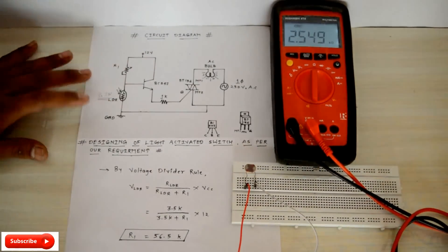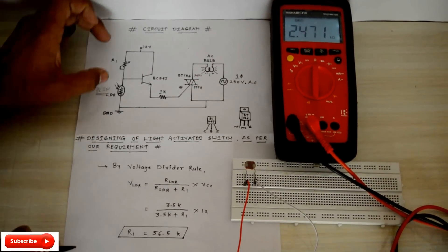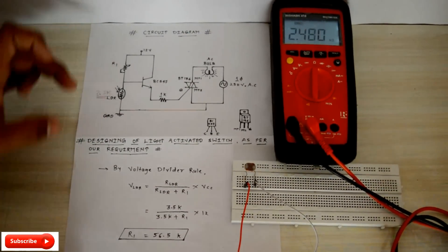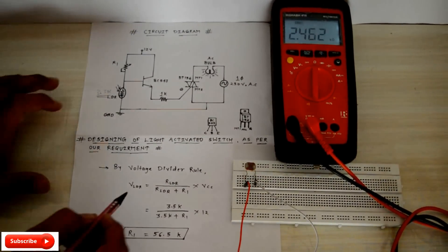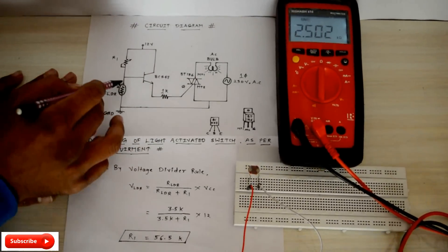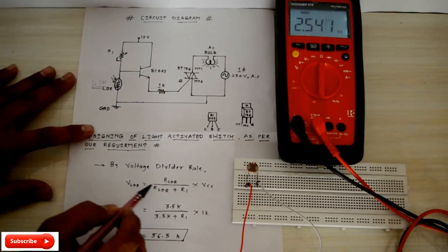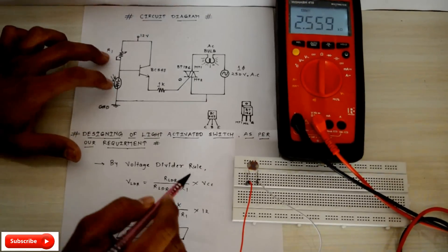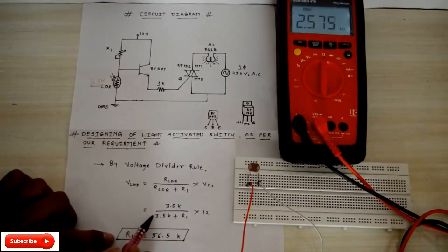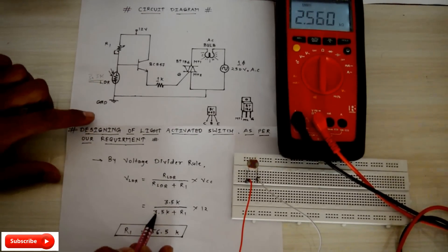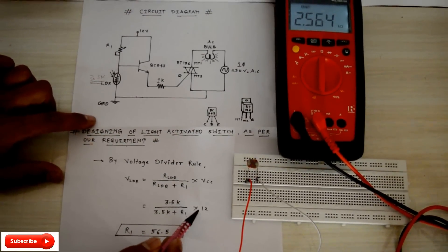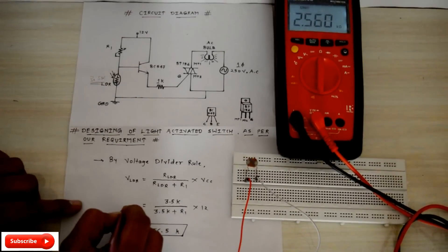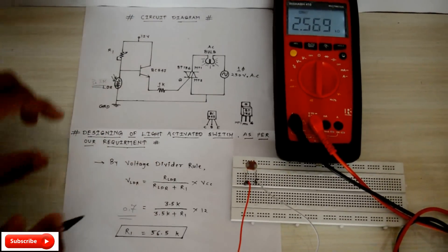The voltage drop across this LDR is equal to R_LDR divided by total resistance into VCC. This is nothing but 3.5K upon 3.5K plus R1 into 12, and it is 0.7V. This is the transistor turn on voltage, it's minimum up to 0.7V. When the voltage goes above 0.7V, then the transistor can turn on.